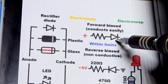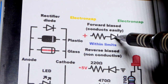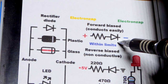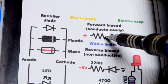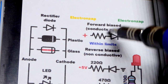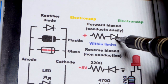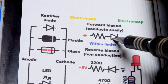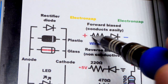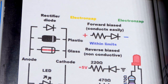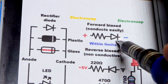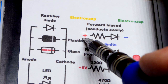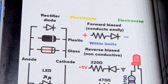Diodes do not limit current once it starts flowing through them. They drop a little voltage — it takes a little bit of voltage to get them to conduct — and once you exceed that voltage, current flows freely, so you need something else to limit it. That's forward bias, the direction it's going to conduct. The schematic symbol makes an arrow pointing from positive to negative supply, because conventionally current was thought to flow from positive to negative. We now know electrons go negative to positive, but we still refer to conventional current going positive to negative.